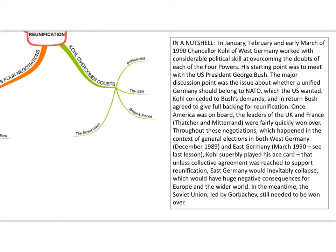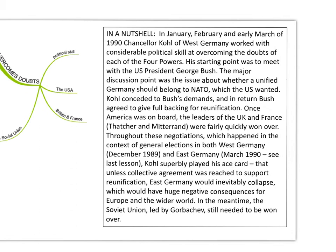The next heading is how Kohl overcame the doubts. In a nutshell: in January, February, and early March of 1990, Kohl worked with considerable political skill — an important point to emphasise in essays. His approach was to pick the four powers off one by one. He was a very cunning negotiator, and he started with US President George H.W. Bush.